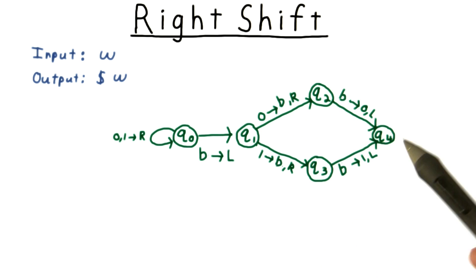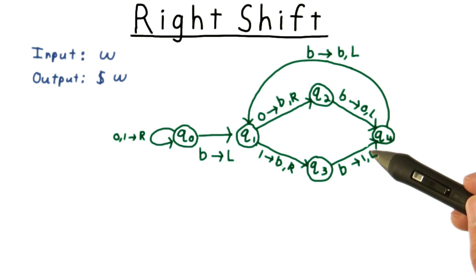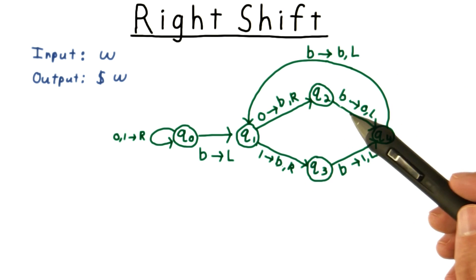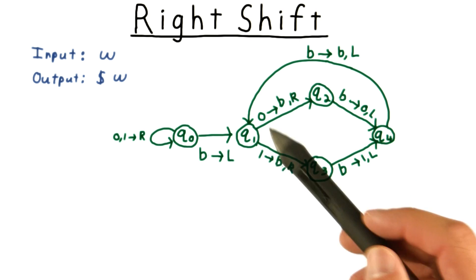The next symbol will necessarily be a blank, and we want to replace it with a 0 or a 1 as appropriate. We move the head to the left, and then left again to return to the last symbol of the unshifted string.